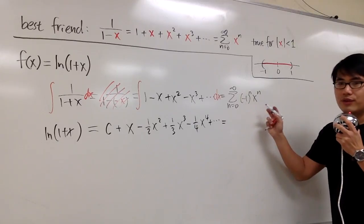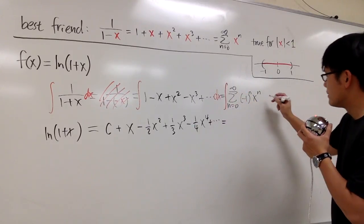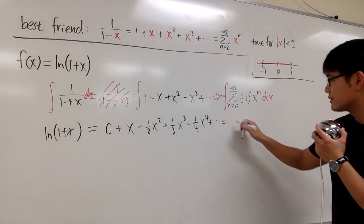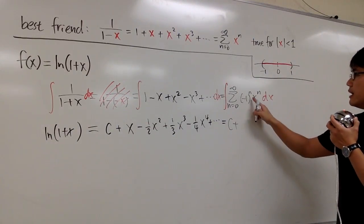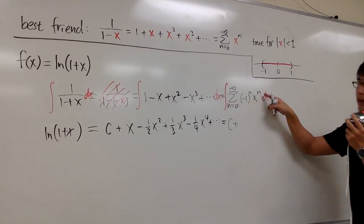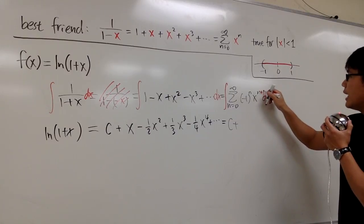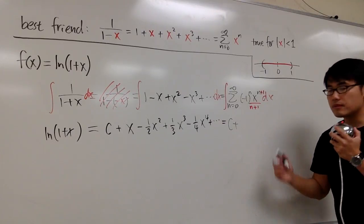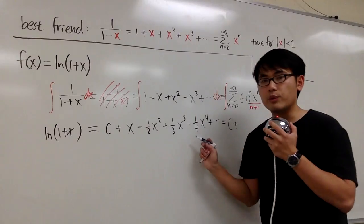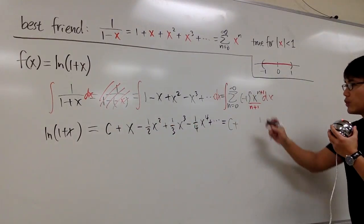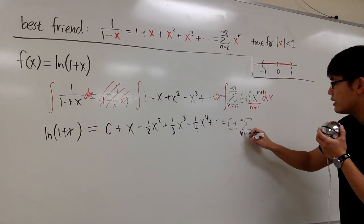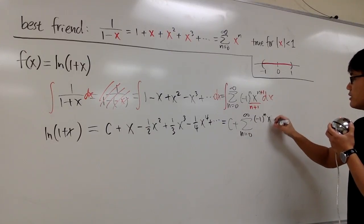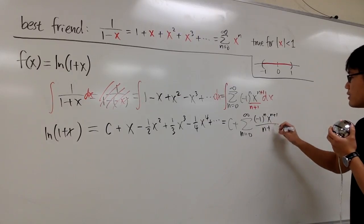For the sigma notation version, integrating the series: we still have c plus sigma from n=0 to infinity. We add one to the exponent and divide by the new exponent, so we get negative 1 to the nth power times x to the (n+1) over (n+1). We don't lose any terms when we integrate.